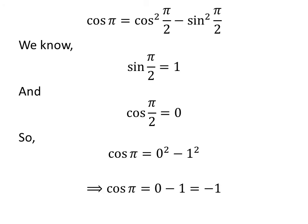As square of 0 is 0 and square of 1 is 1, so cosine of pi is equal to 0 minus 1, which is equal to minus 1. So, value of cosine of pi is equal to minus 1.